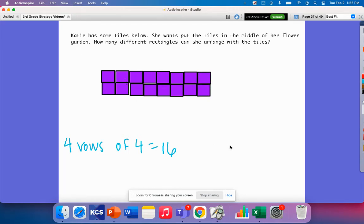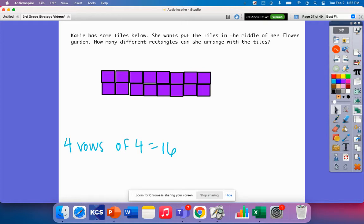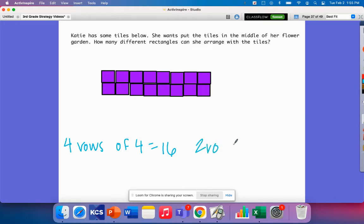Looks like I could have two rows of one, two, three, four, five, six, seven, eight. Two rows of eight. Two rows of eight. So two rows of eight, that would be 16.